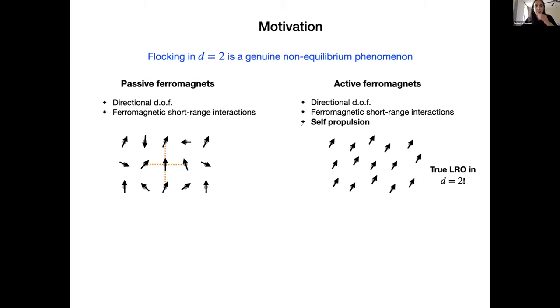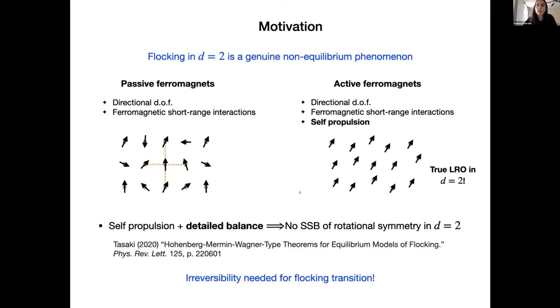So let's start with a little bit of motivation. The motivation comes from the fact that flocking, as you know, is a genuine non-equilibrium phenomenon, especially in two dimensions, because the same type of phase transition is not allowed in passive systems, in the passive counterparts of flocking systems, which are passive paramagnets, where we have particles which are equipped with a directional degree of freedom, something that is vector-like, and it comes with a symmetry, that is the continuous rotational symmetry, and ferromagnetic short-range interactions. If we add to these ingredients self-propulsion, then we have active ferromagnets, Vicsek-like models. And in this case, true long-range order can be observed even in two dimensions.